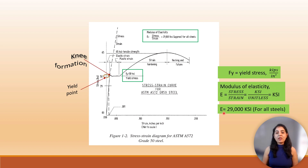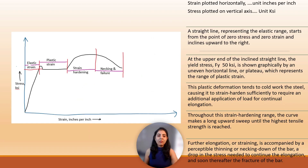The ratio of stress to strain is expressed in units of ksi. Its standard value is 29,000 ksi for all steels. Strain is plotted on the horizontal axis in units of inches per inch and stress is plotted on the vertical axis in units of ksi. A straight line representing the elastic range starts from zero stress and zero strain and inclines upward to the point of yield stress. This range is called elastic strain. At the upper end of the inclined line at yield stress of 50 ksi, there is an uneven horizontal line or plateau which represents plastic strain.